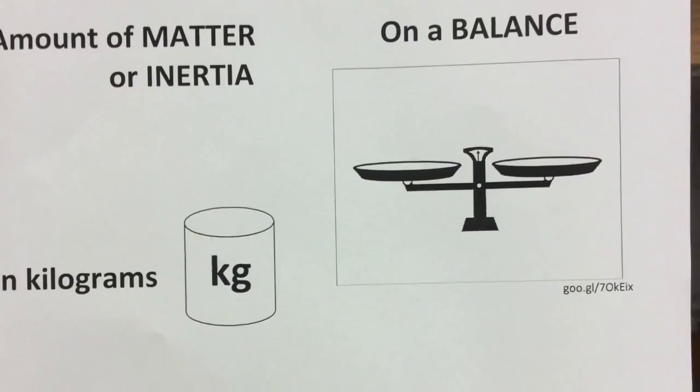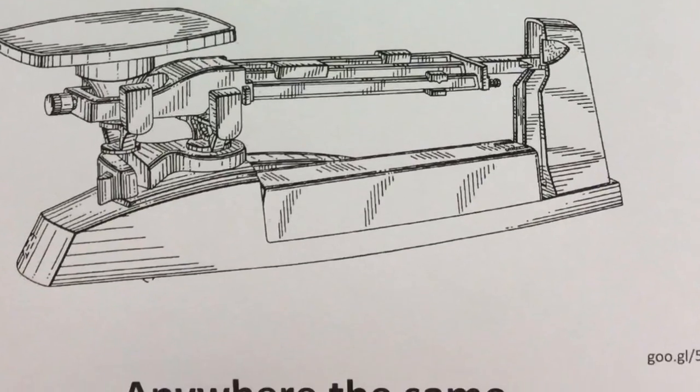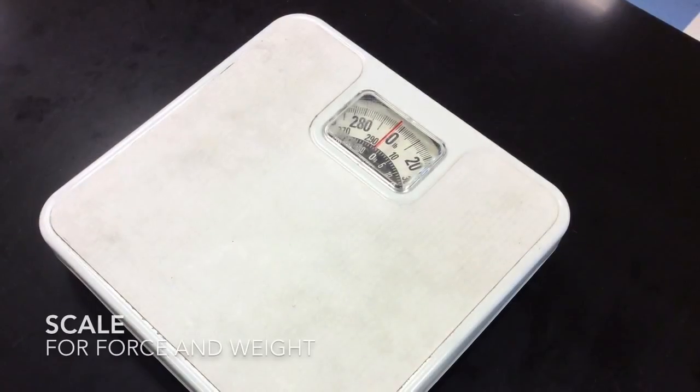Remember that mass is the amount of matter or inertia in an object measured on a balance, units are kilograms, and it doesn't change.